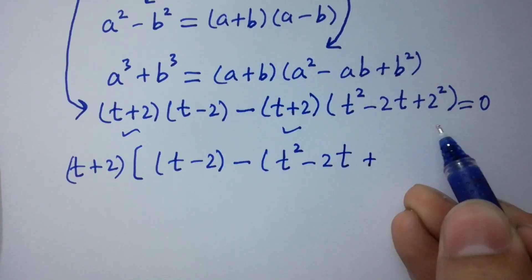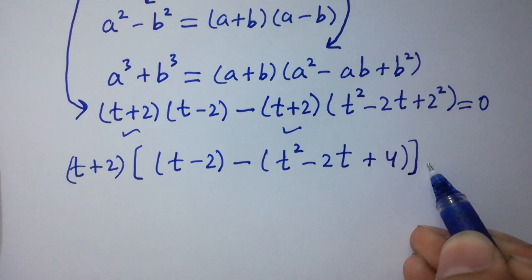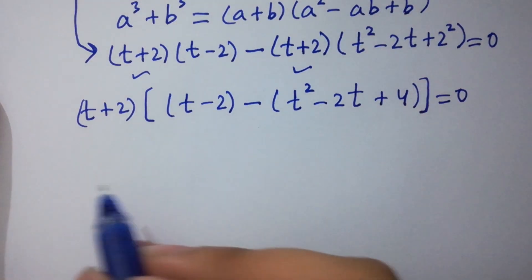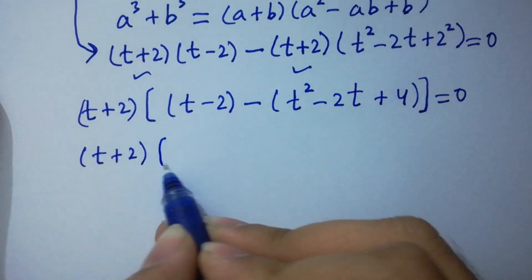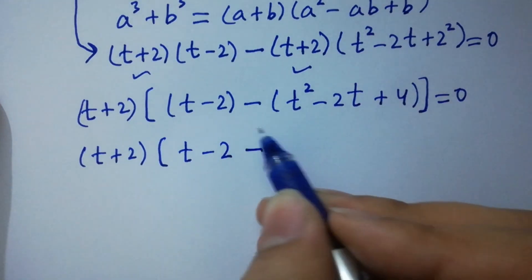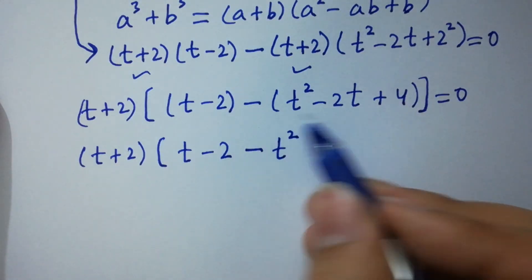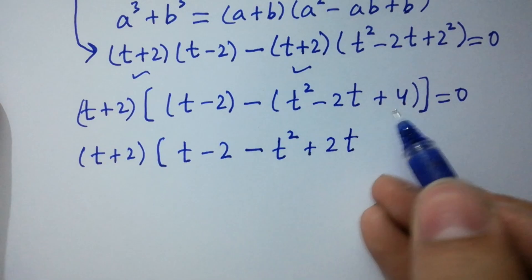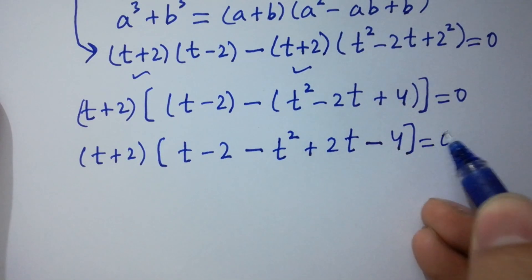Simplifying further: t squared plus 2 times 2 gives 4, equal to 0. We have t plus 2, then t minus 2, minus t squared, minus minus plus 2t, minus plus, we have minus 4, equal to 0.